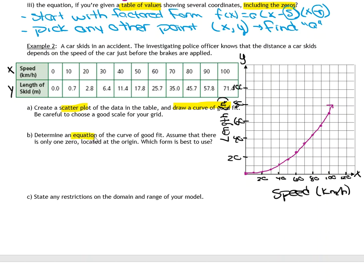So there's part A done. Part B says determine an equation of the curve of good fit. Assume there is only one zero located at the origin. So which form is best used? And this is what I stressed above in our questions above. Always what form do you want to use? We have to decide that first. So since we have one zero located at the origin, we could use factored form or vertex form. If we use factored form, we would just be using zero twice. If we use vertex form, we're going to be using zero zero. So let's just do vertex form. I'm going to start with y equals a(x minus d)² plus c. And I'm going to sub in the vertex and it would also be okay instead of the vertex form to use factored form.